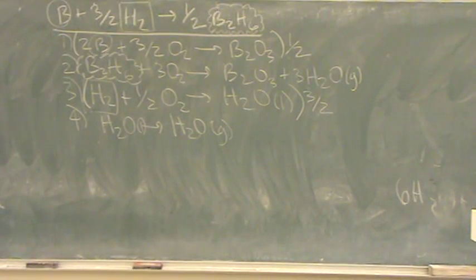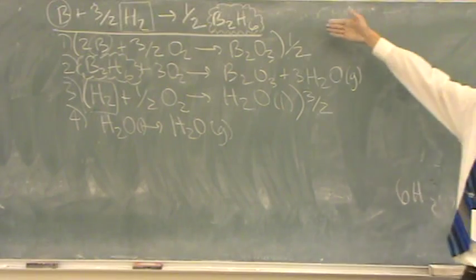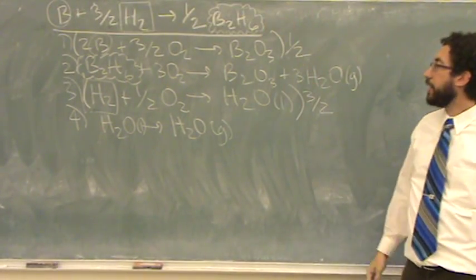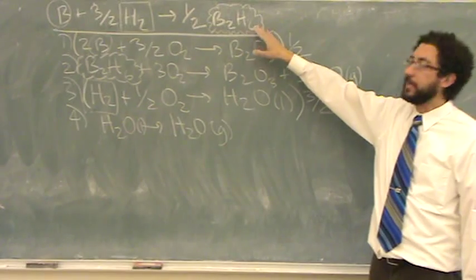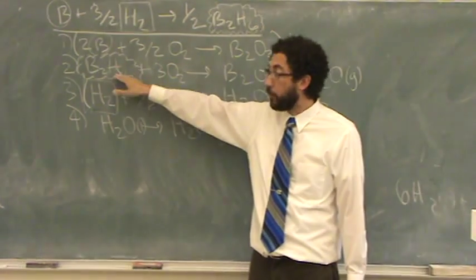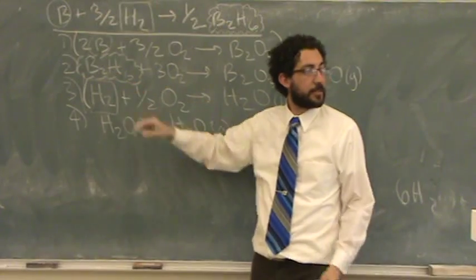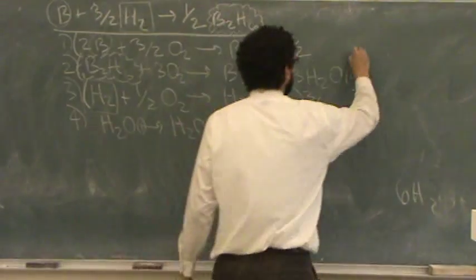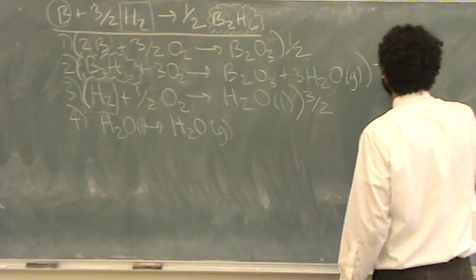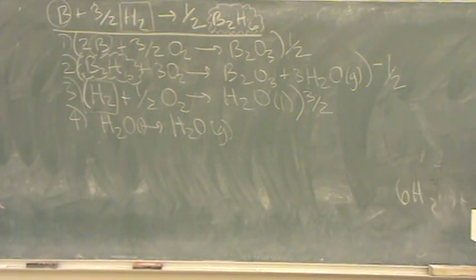And then now let's look at the last one, the B2H6. I need one half in the products, but notice down here I only have one and it's in the reactants. So to fix that, I'm going to multiply the second reaction by minus one half. The minus flips it to the products and the one half allows me to have one half. Now notice the first three reactions have a parenthesis and a multiplier. Those three are locked down, meaning you can't change them now. Once they have a multiplier, you don't change them anymore, they're done.